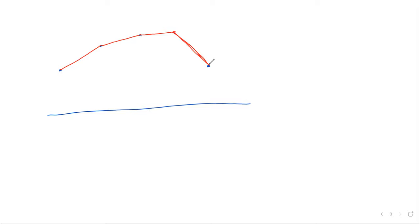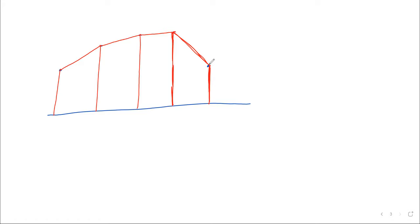This is called the trapezoidal rule because we want the area under the curve, and by treating the curve as a bunch of straight line segments, we can break the region up into four trapezoids — hence trapezoidal rule. We find the area of each of these trapezoids in turn and add them together, and that's our approximation.